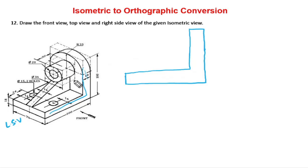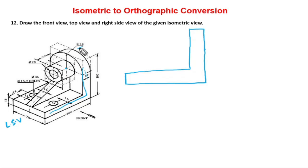If you observe this particular point, this center is actually for the semicircle as well as for the circle. The bigger circle and smaller circle — this is a semicircle. We take the center here for the semicircle. That is R35, so we mark the center for that one.